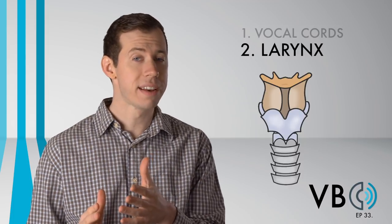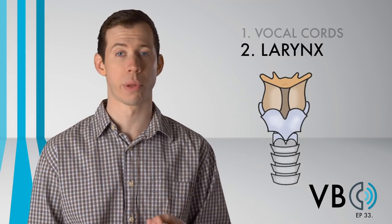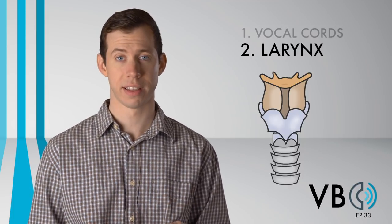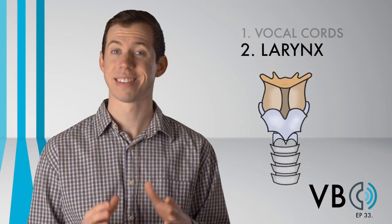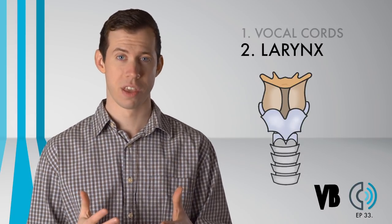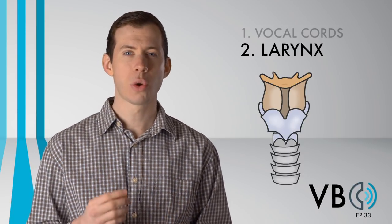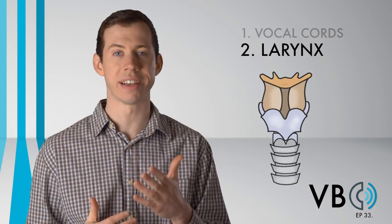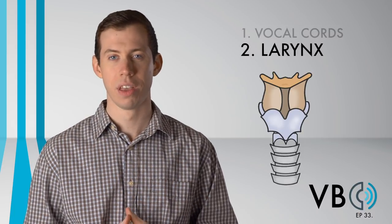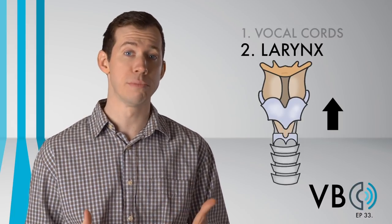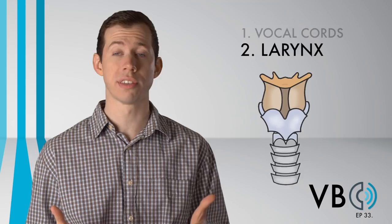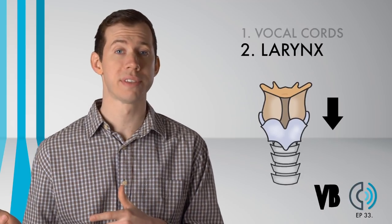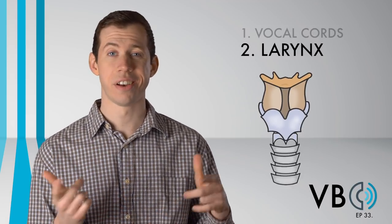That being said, there is some variability to Bullwinkle's larynx height. It is not static, but dynamic. You'll hear these quick moments of ascension and descension in his larynx height. We have seen this dynamic larynx movement in other voices, like Mario in episode 16 and Goofy in episode 21.